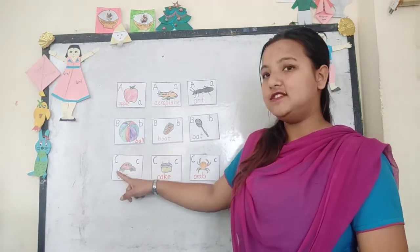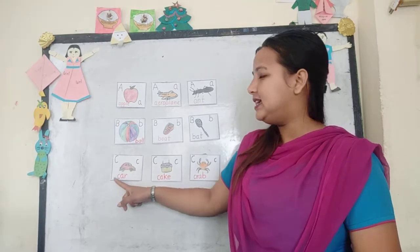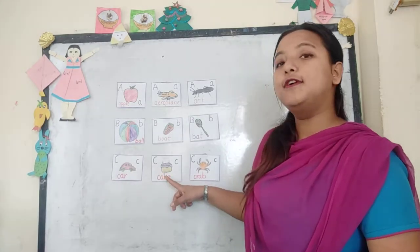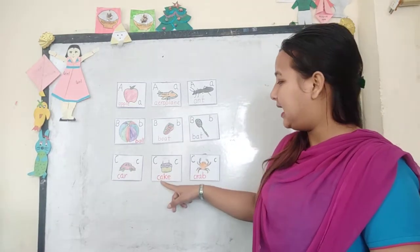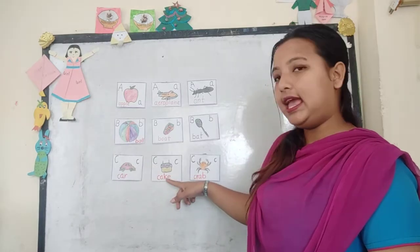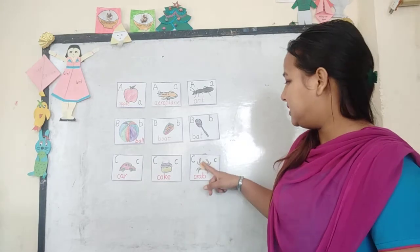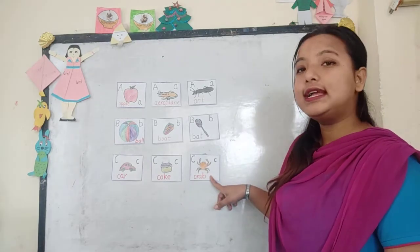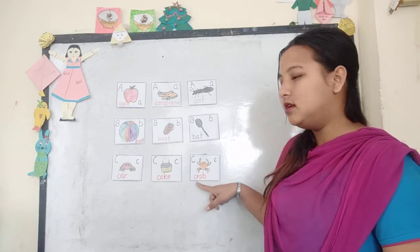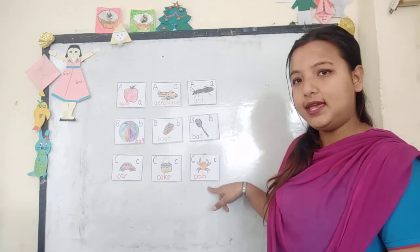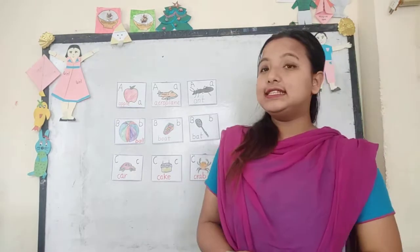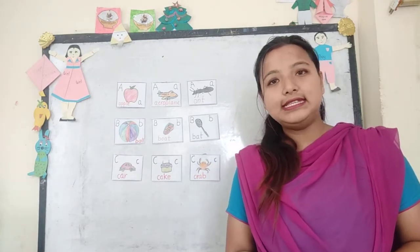C is for car. C-A-R, car. C is for cake. C-A-K-E, cake. C-A-K-E, cake. C is for crab. C-R-A-B, crab. C-R-A-B, crab.